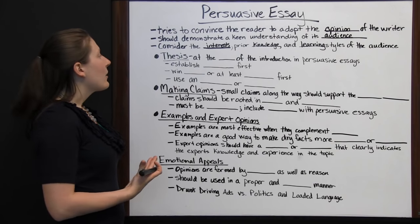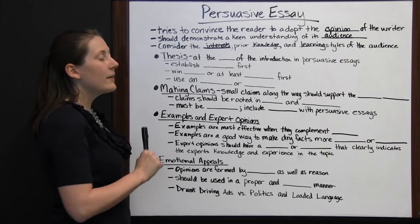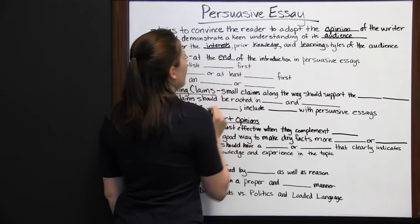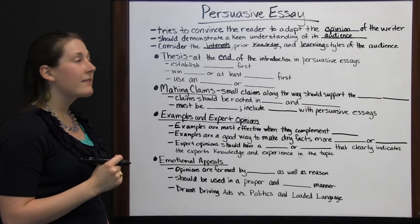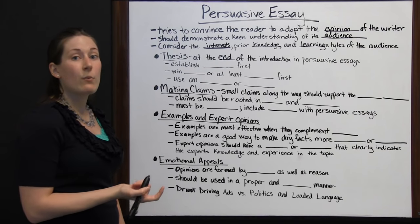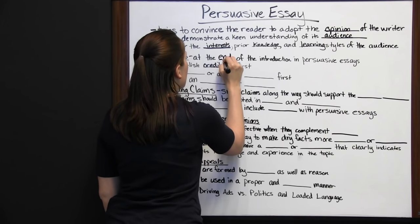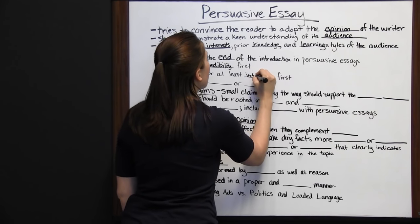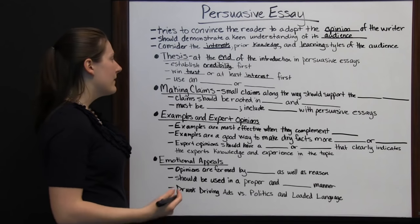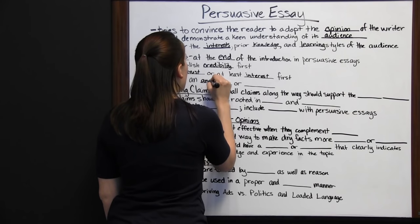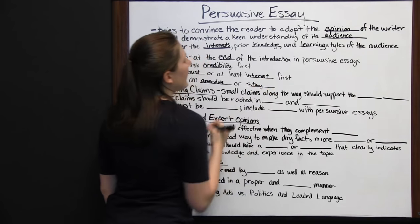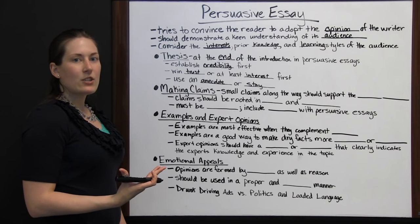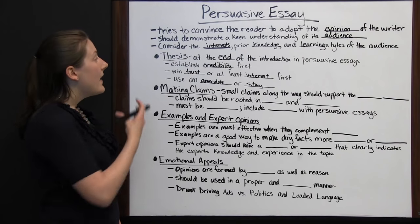At the beginning of every persuasive essay, you'll want to develop your thesis. The thesis will be in the introduction, but at the end — not the beginning — because in a persuasive essay you want to establish credibility first. You want to win the trust of the audience, or at least their interest, before telling them what you're trying to convince them of. One way to do this is to use an anecdote or short story that warms the audience to you, establishes you as a credible source, and then leads into your thesis.